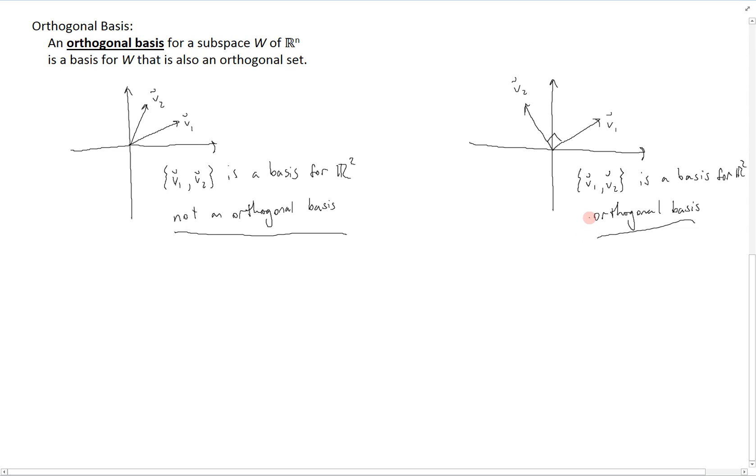The nice thing about an orthogonal basis is that finding the weights in a linear combination to get to a point in this space becomes much simpler than it was before. Specifically, let's say that we have a set V1, V2, up to Vp. And let that be an orthogonal basis for a subspace W of Rn.